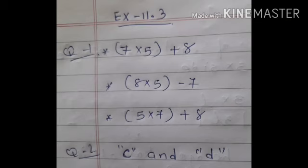First one: make up as many expressions with numbers, no variables. We don't have variables to use. Variable means some alphabet A, B, C, X, Y, Z, whatever. As you can, from three numbers: 5, 7 and 8. Every number should be used not more than once. Use only addition, subtraction and multiplication. So we should follow this condition here.